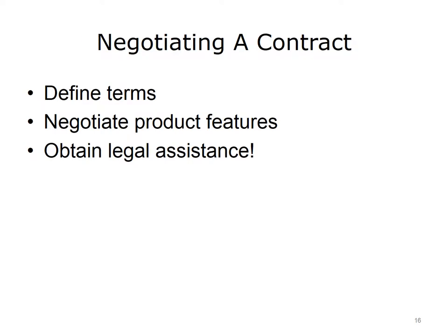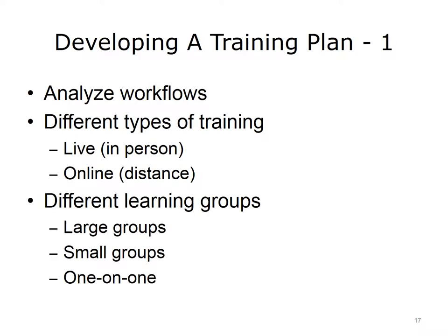Contract negotiations are complex and often challenging for organizations. From the beginning, the organization and the EHR vendor should clearly define, understand, and agree with the terms of purchase and service. Product features are often negotiable and should be factored into the overall process of system purchasing. The cost of adding additional modules or features should be included before final negotiations commence. An organization must remain aware that the final contract is a legally binding document; therefore, it is prudent to obtain legal assistance when negotiating a contract with the EHR vendor.